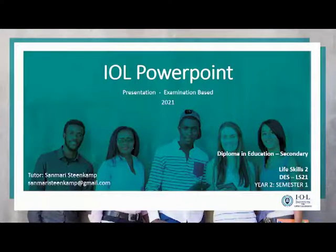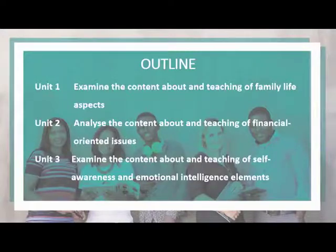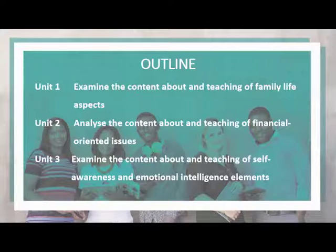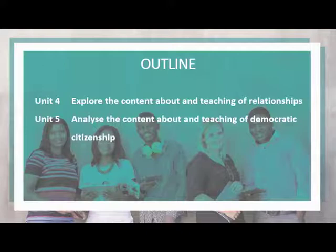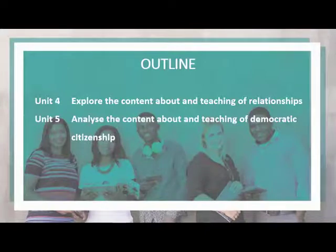We're going to jump right in and move on to look at the different units in your study guide. You have five units. Unit 1 examines the content about teaching of family life aspects. Unit 2 looks at analysing the content about the teaching of financial-orientated issues. Unit 3, we look at teaching of self-awareness and emotional intelligence elements. Unit 4 looks at the content about teaching of relationships.